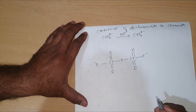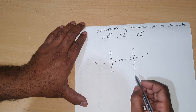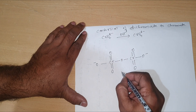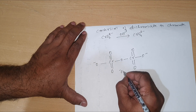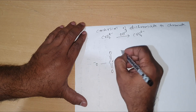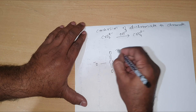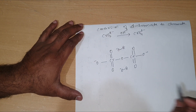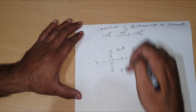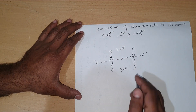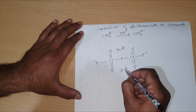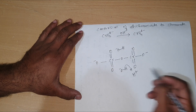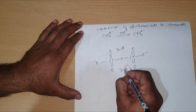This conversion of dichromate to chromate will happen in the presence of a base. For convenience, I am going to write two OH⁻ ions. Since the dichromate is in the basic medium, one of the OH⁻ ions — the oxygen — decides to kick out its hydrogen as H⁺, taking the bond on it as a negative charge.